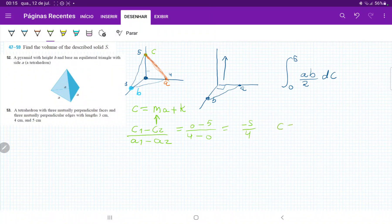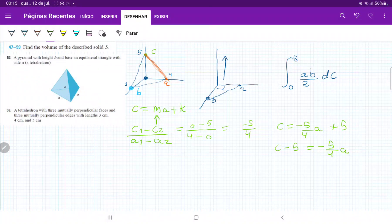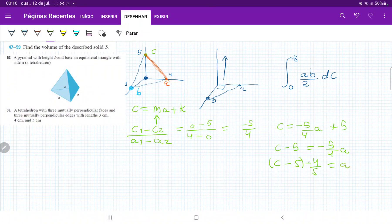Therefore, we can say that C is equal to minus 5 over 4A, plus the intercept here, and we can see that the intercept on the axis is just 5. So we say plus 5. And so we have our first expression. So C minus 5 is equal to minus 5 over 4A, and therefore, C minus 5 times minus 4 over 5, this is equal to A.